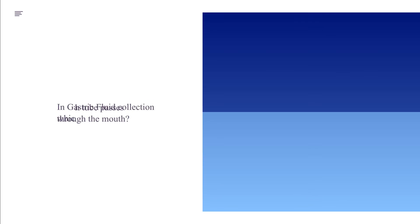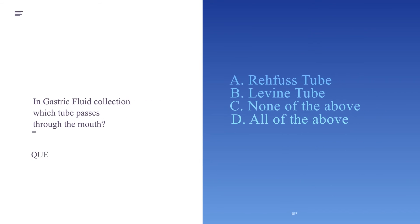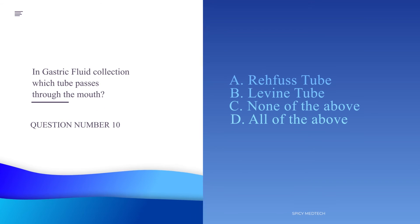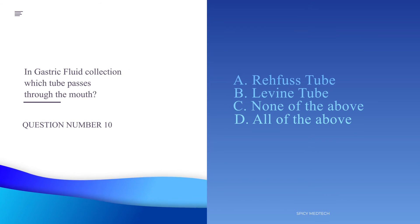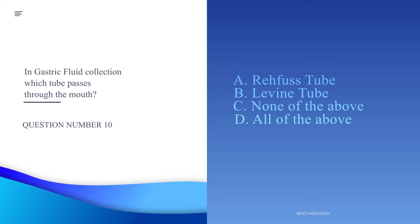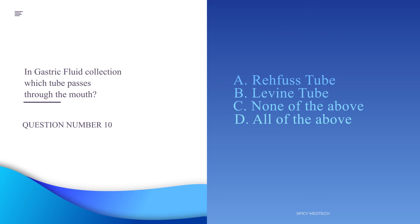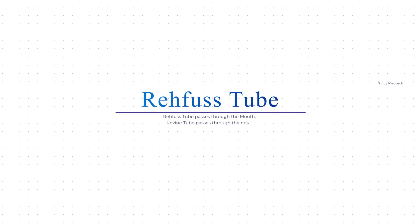Number ten: In gastric fluid collection, which tube passes through the mouth? A. Rehfuss tube, B. Levine tube, C. None of the above, or D. All of the above. The Rehfuss tube passes through the mouth for gastric fluid collection, while the Levine tube passes through the nose.